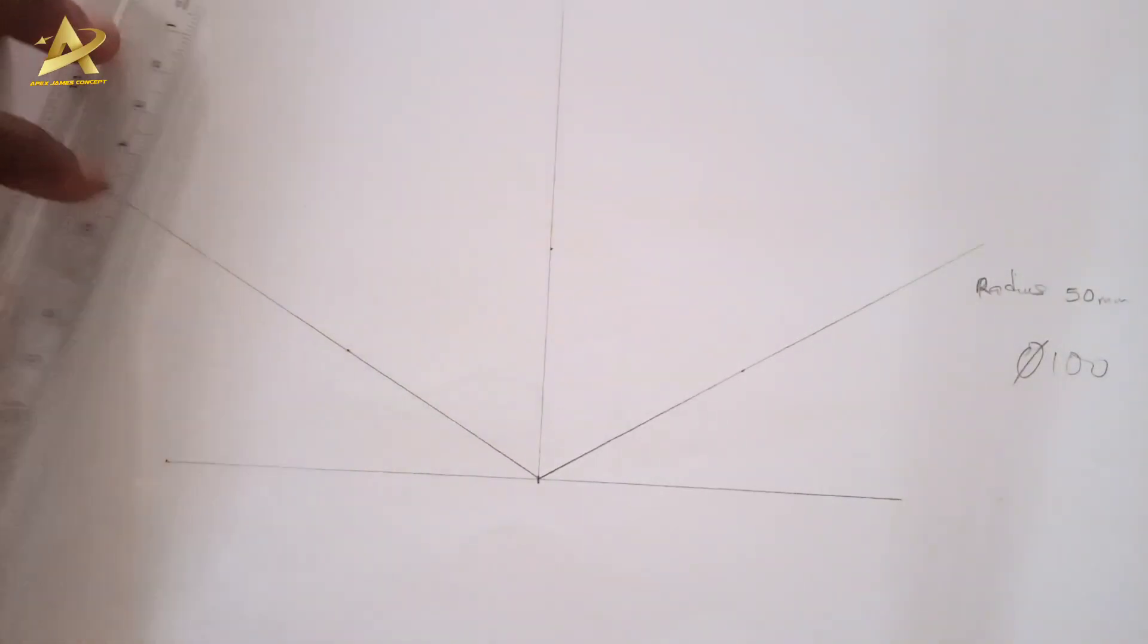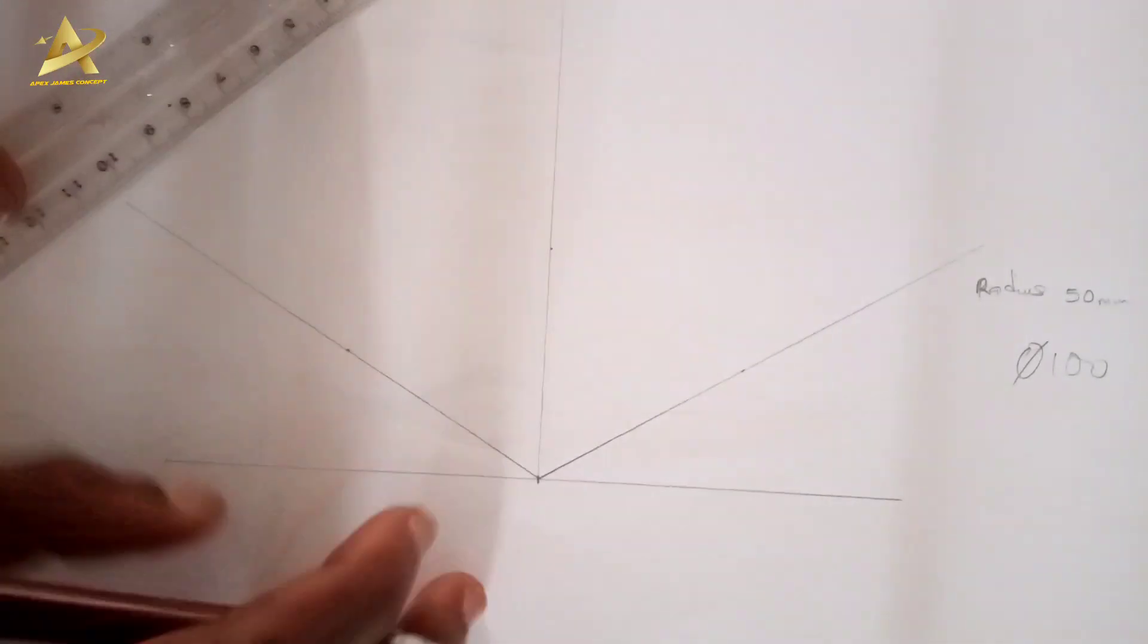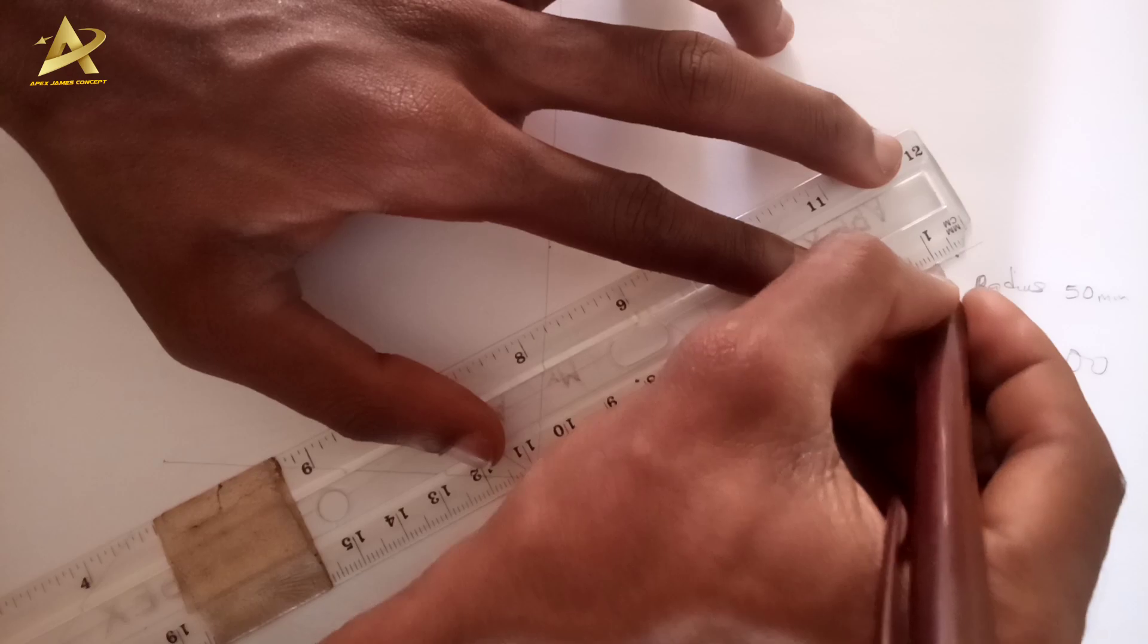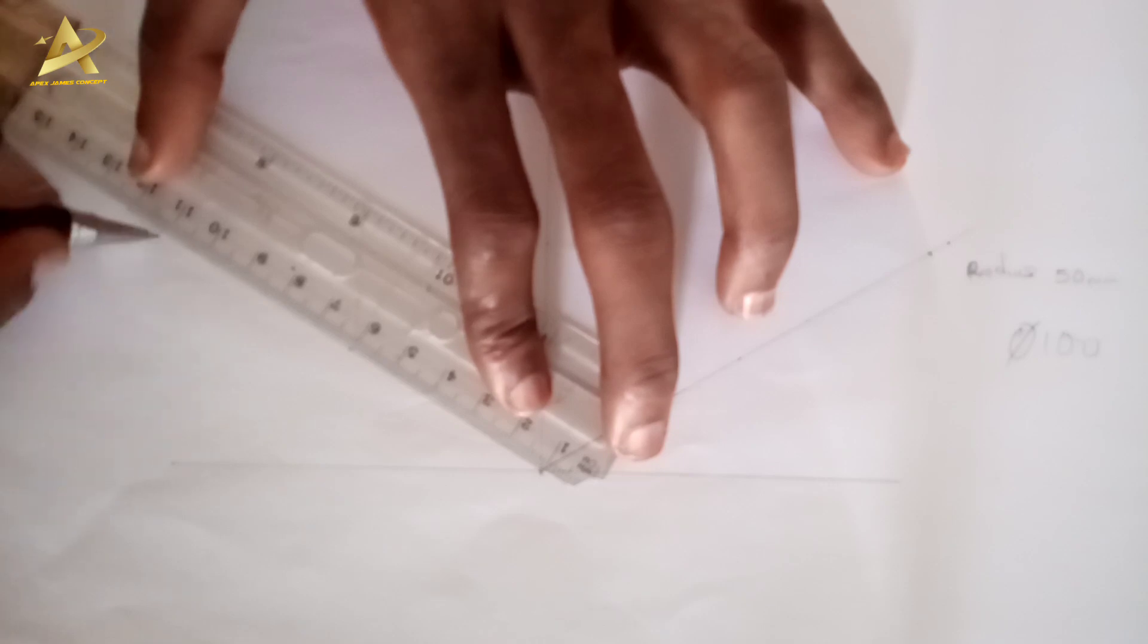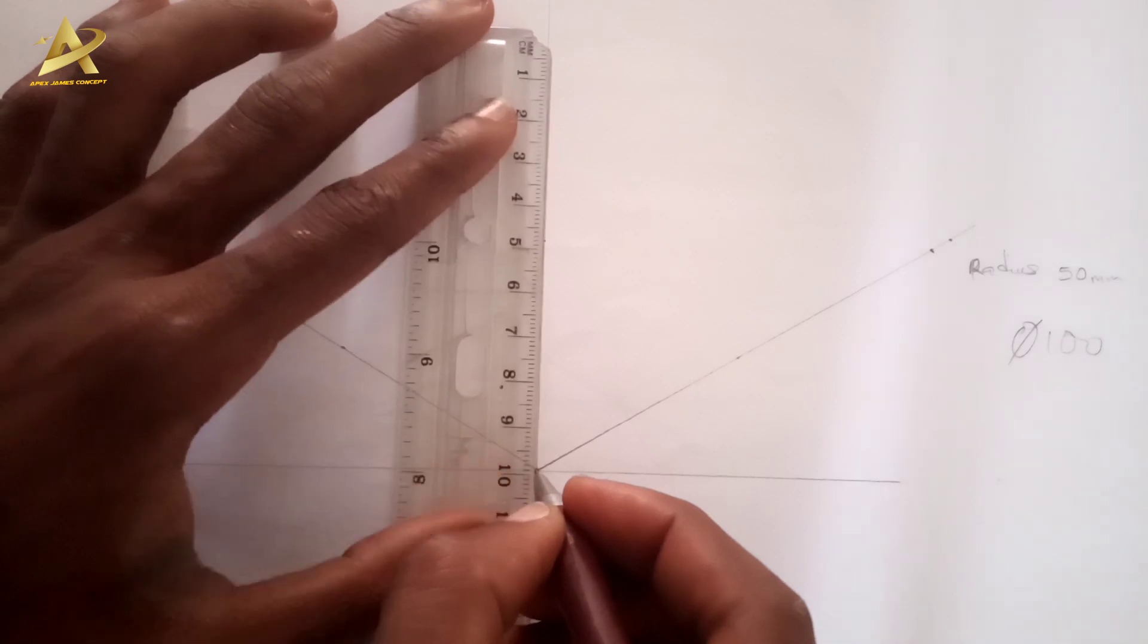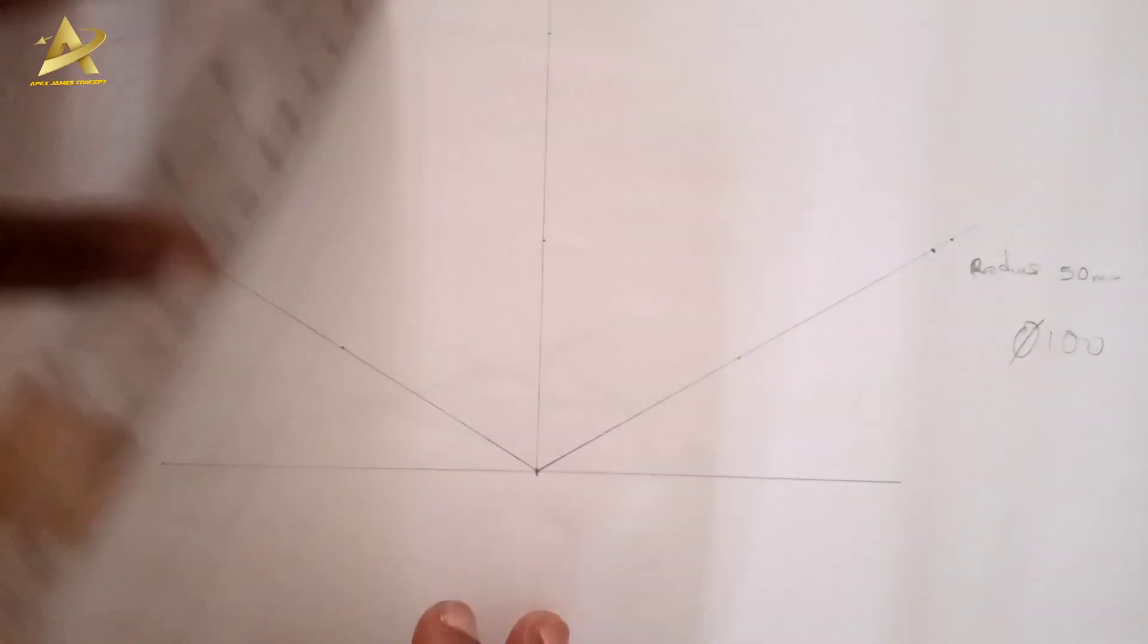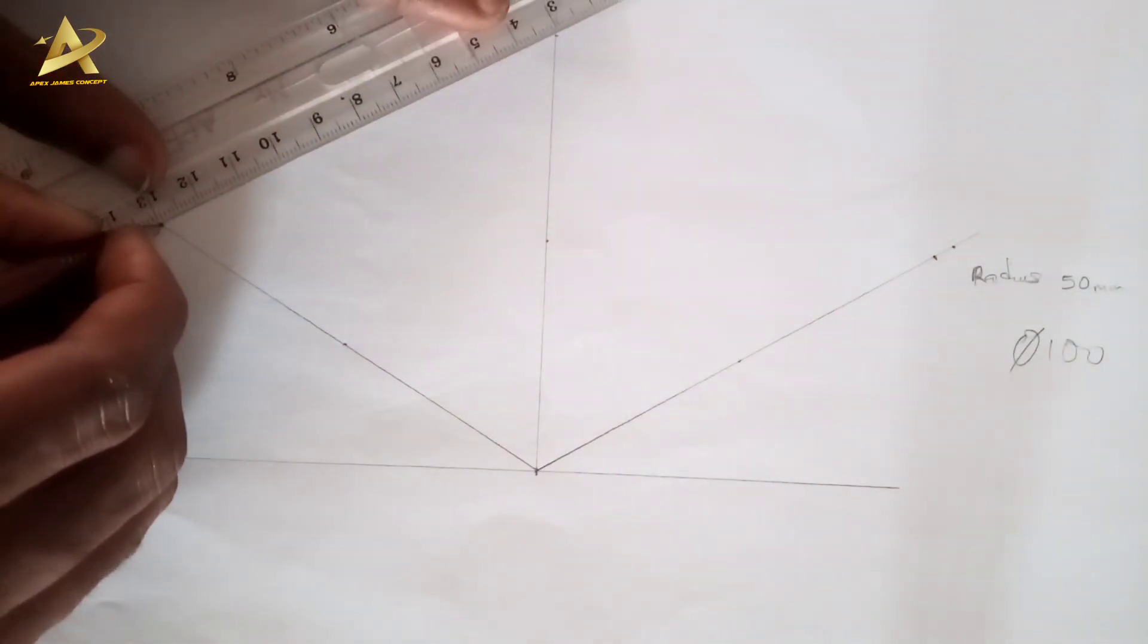Since my circle will be of radius 50 millimeters, which is diameter 100, I'll ensure that these three lines are of length 100. Now I will join this point to get an isometric square.